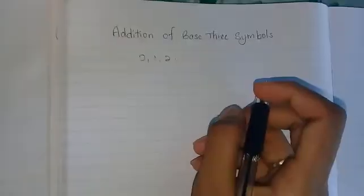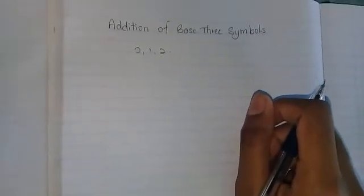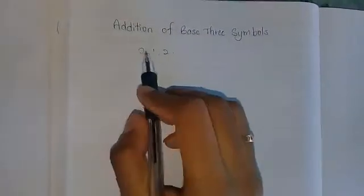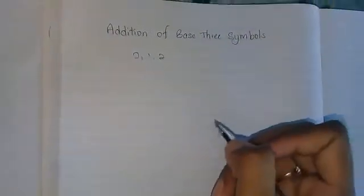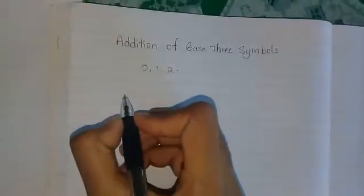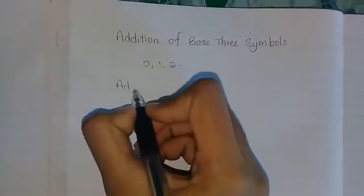And in base 10, we use from 0 to 9. Those are the symbols. In base 2, we only use the symbols 0 and 1, right? So, what we'll do today is add base 3 numbers.